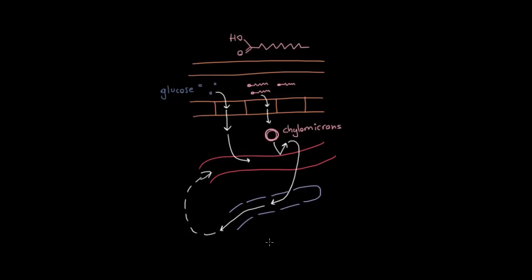Because this is such an important process, these lymphatic vessels in your small intestine are given a special name, and that name is lacteal. So the lymphatic vessels in your small intestine are known as lacteals, and those are the ones that take up your fats in the form of chylomicrons.